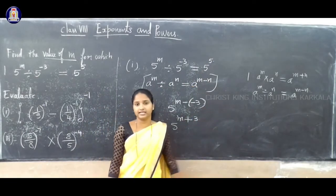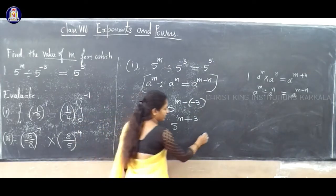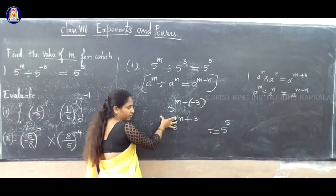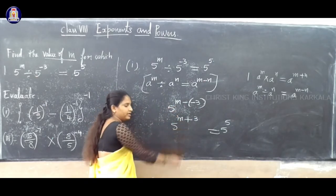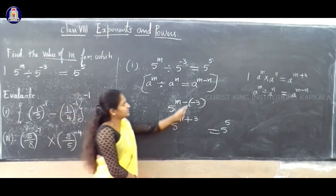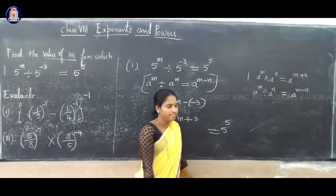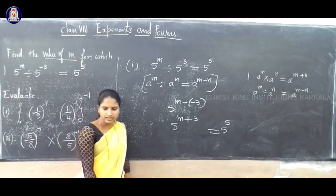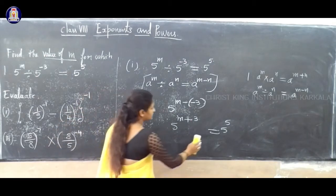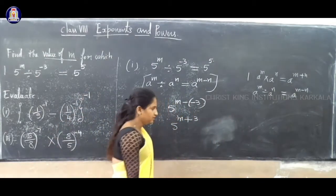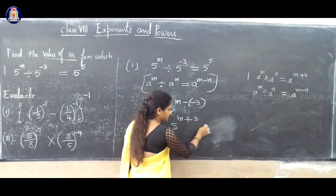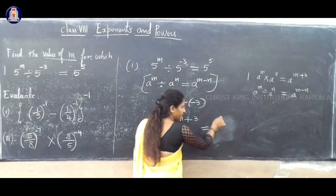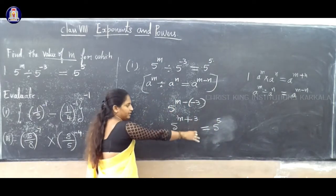Now, what is this? This is the left-hand side. The answer we got is 5 power n plus 3. So what is given on the right-hand side? The right-hand side value is given as 5 power 5. We simplified the left-hand side and got 5 power n plus 3. The right-hand side is given as 5 power 5.